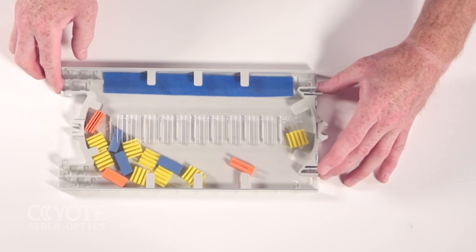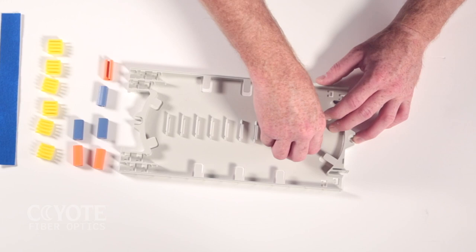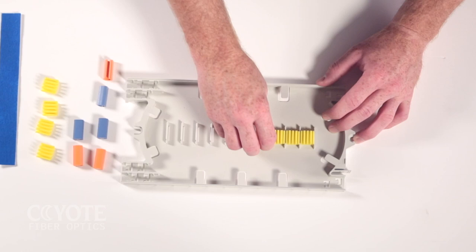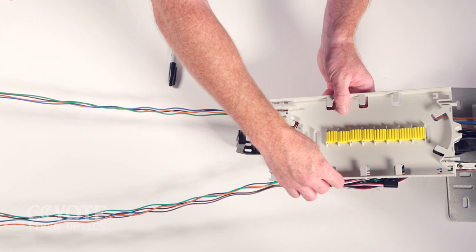Remove the cover by pressing the two tabs in and lifting the cover. Secure the splice blocks into the splice block retention slots. Place the splice tray onto the organizer posts and route the buffer tubes to the splice tray.